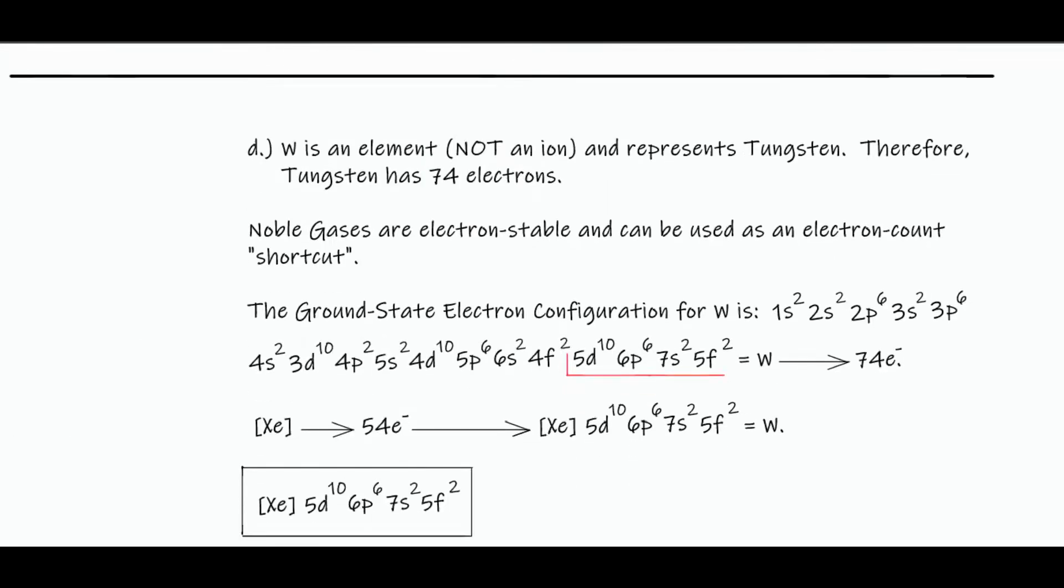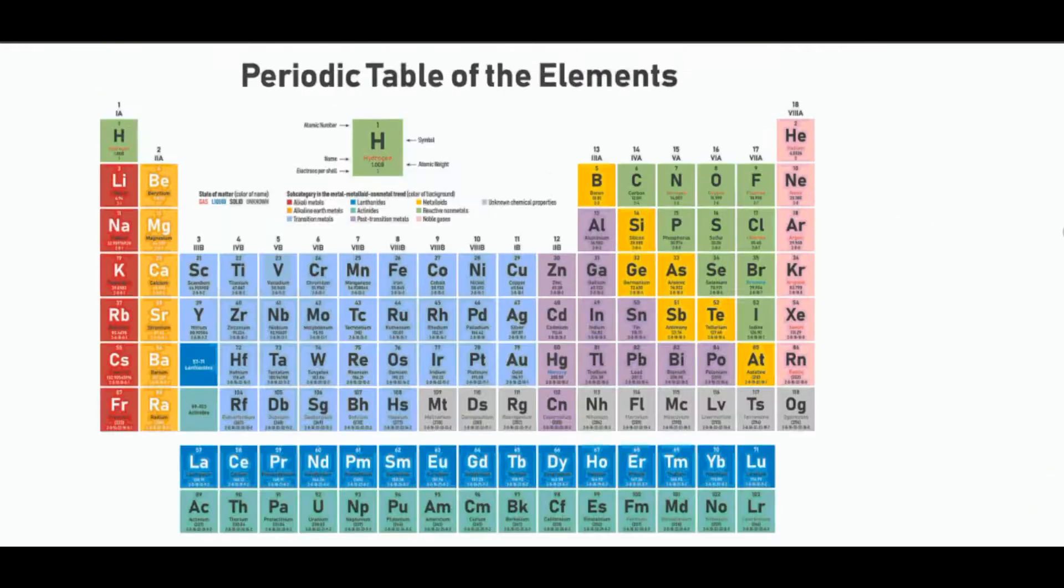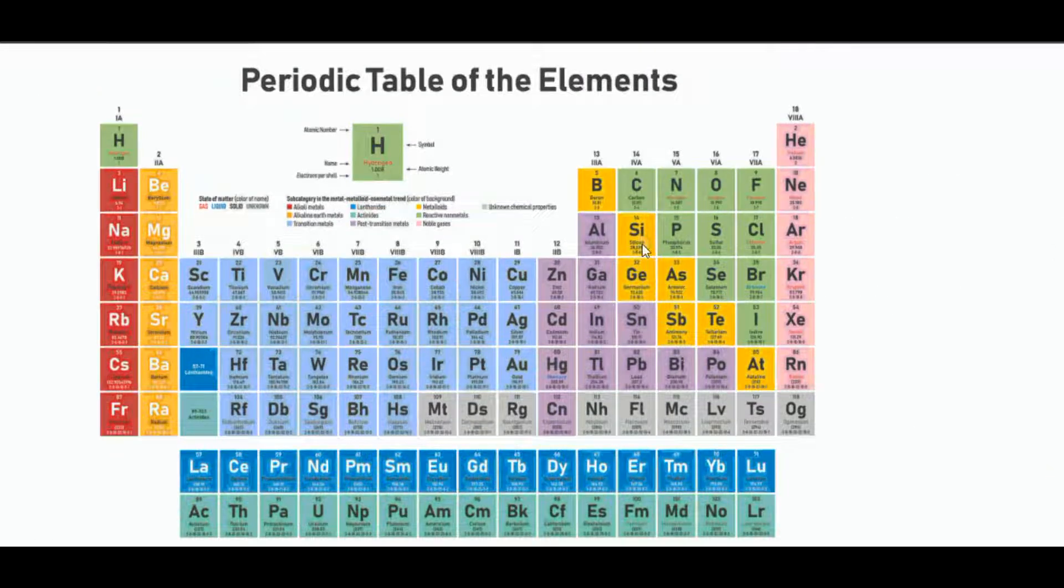And then lastly, tungsten, we have 74 electrons, 74 electrons, tungsten, W.